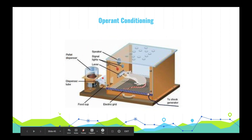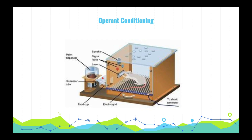The box contains a bar that the rats inside can pull to dispense pellets. What we saw was that over time the rats got faster and faster at pulling the lever when they were hungry — they learned that pulling the lever gave them food. Operant conditioning like this is extremely good at shaping and reinforcing behaviors, and we commonly use negative and positive reinforcements with our children and pets.